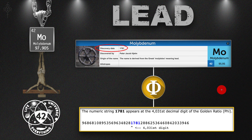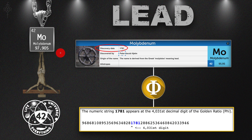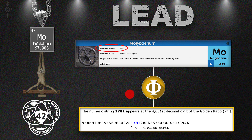Last but not least: the element molybdenum, the other lead. The discovery date is the year 1781, discovered by Peter Jacob Hjelm — he was the actual person to extract it. There was another discoverer by the name of Carl Scheele, but the credit was given to Peter. And 1781 — to end this with a bang — appears at the 4031st decimal digit of the golden ratio, with pi right there. The reason I'm showing the upside-down is because it was discovered by Peter. Peter's symbol for the church is the upside-down cross representing the upside-down world. We live in wonderland. His middle name is Jacob — the house of Jacob.